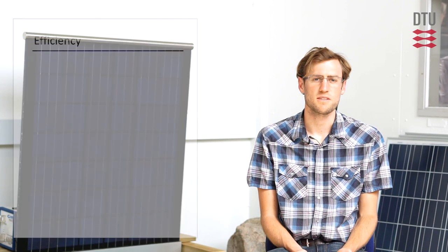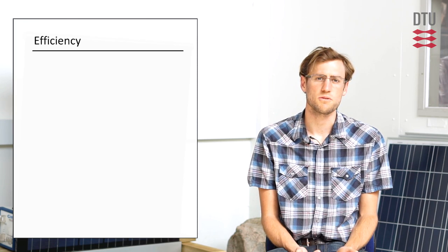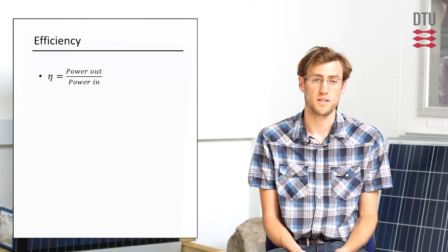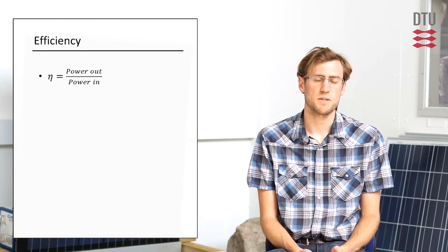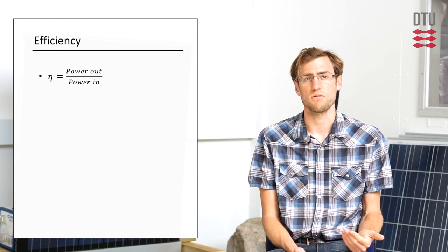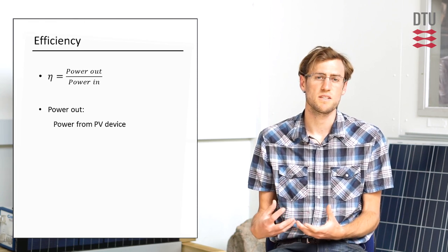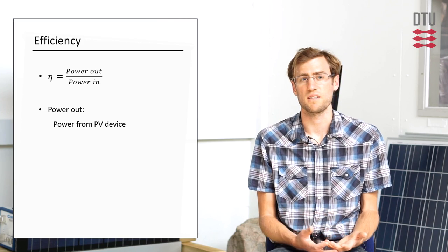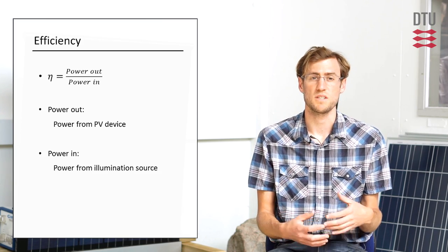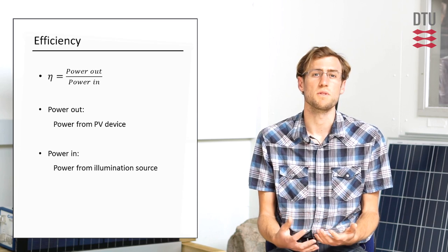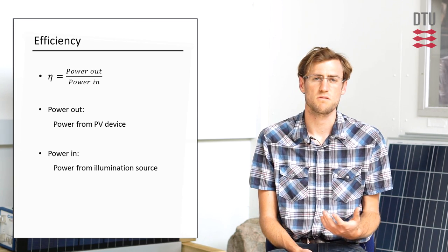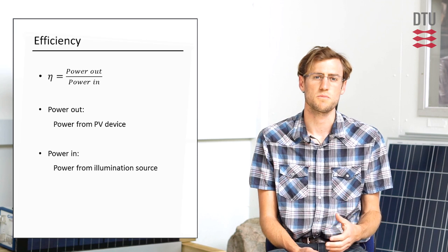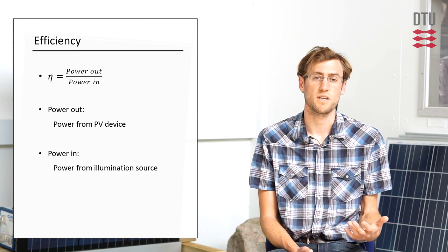Introducing the concept of efficiency is pretty simple. It comes down to an equation where it's power out over power in. So when we talk about that, the power out is the power out from the PV device divided by the power in, which is the power from either the sun or the illumination source. So to get an accurate efficiency measurement requires that both those terms are characterized accurately.